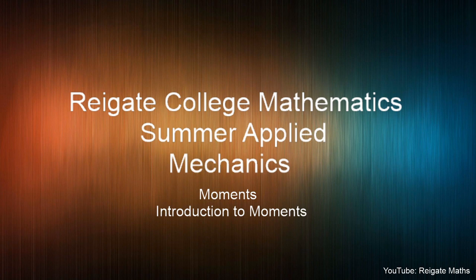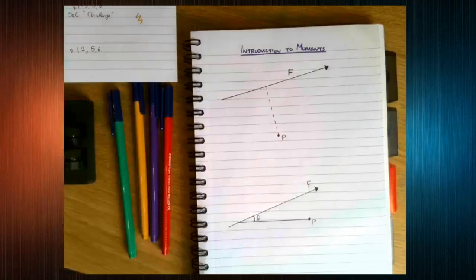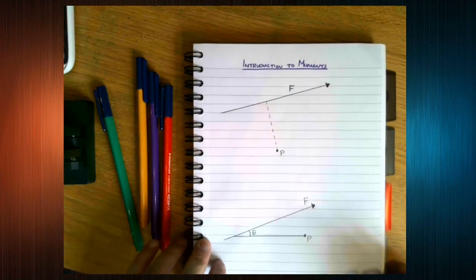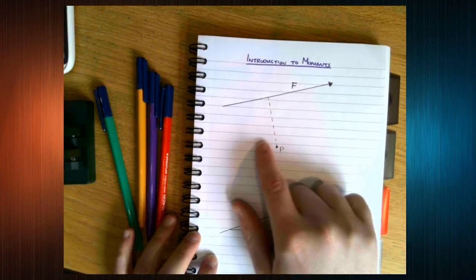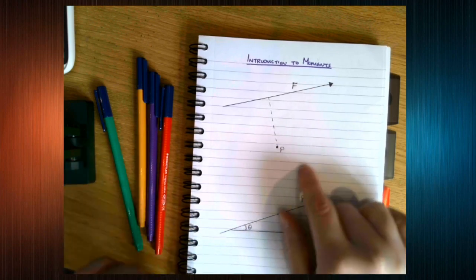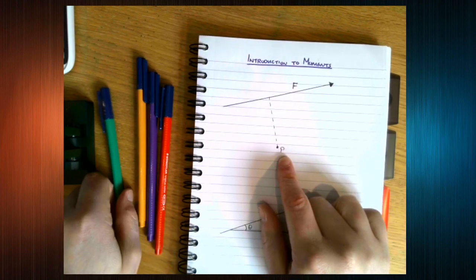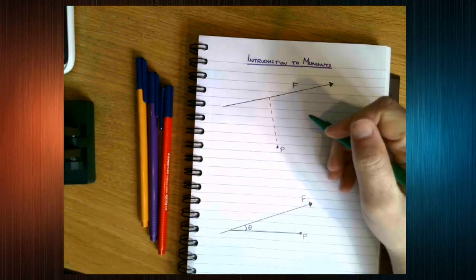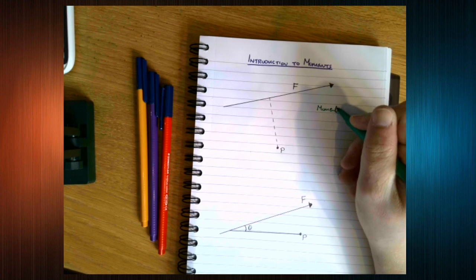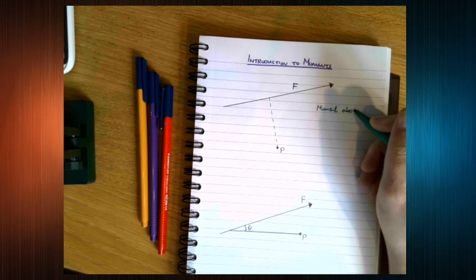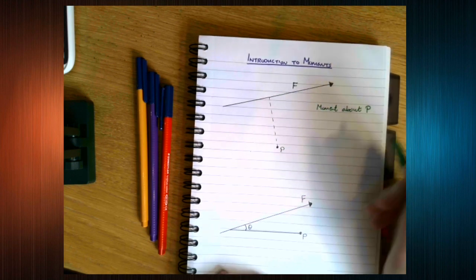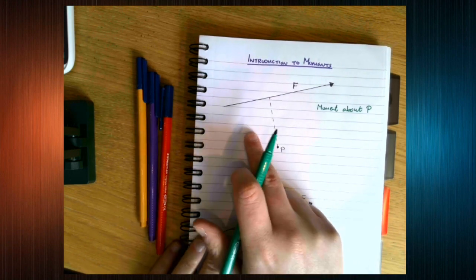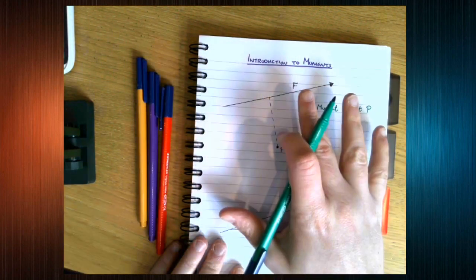So how do we calculate it? A moment, we always need to refer to moments about a point. So we are working on the moment about the point P. If we had a different point here and we calculated the moment about that, we would get a different value.